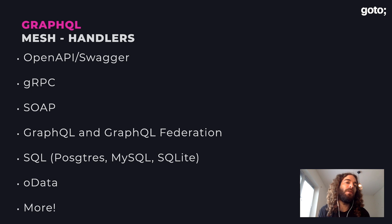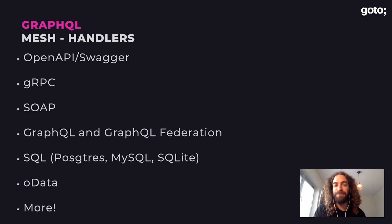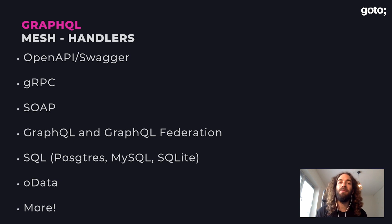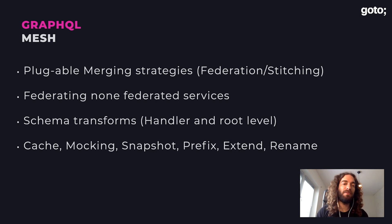I think this is really revolutionary and we're just getting started. Since launch we already have OpenAPI and Swagger, gRPC, SOAP, GraphQL, SQL, and OData — and querying OData with GraphQL is an extremely powerful experience because OData has very similar characteristics. What we're also doing is removing the debate between GraphQL versus OData versus something else — we bring the tools of GraphQL on any source. And there are a lot of customizations: merging strategies between stitching and federation, you can turn non-federated services into federated services, cache each source, mock each source, rename the sources. The output API you get is exactly what you want.